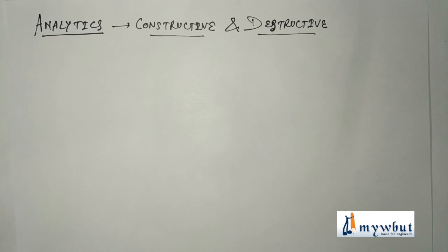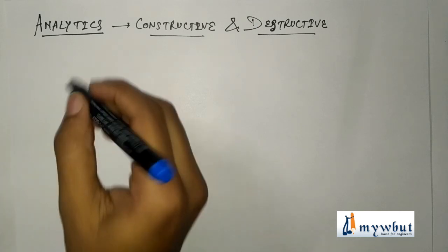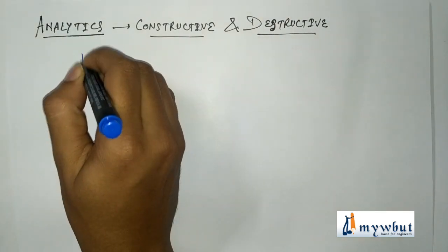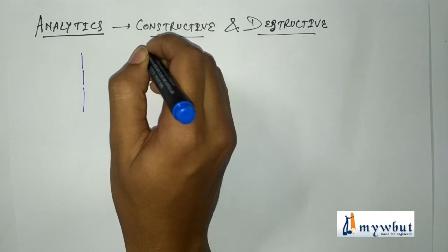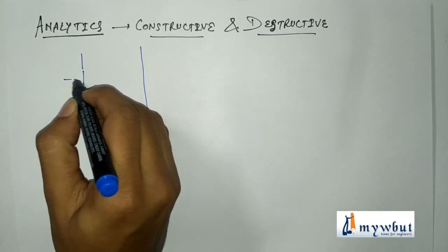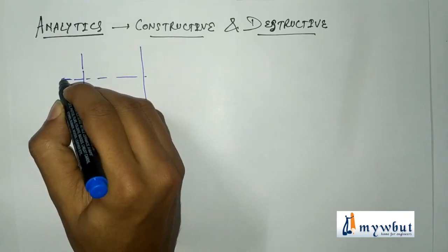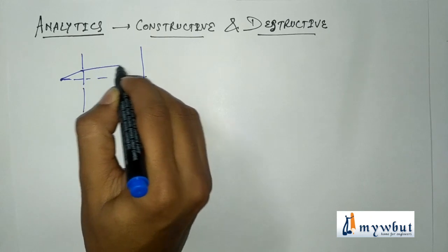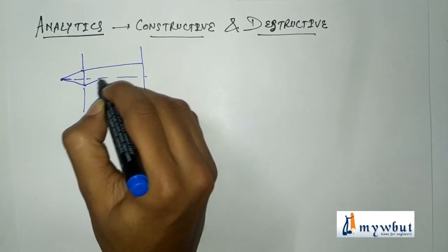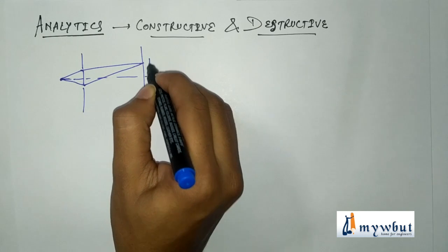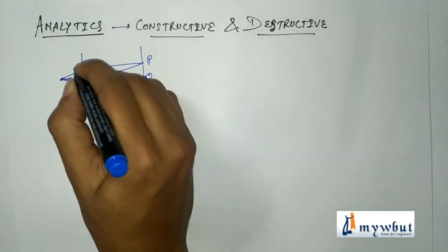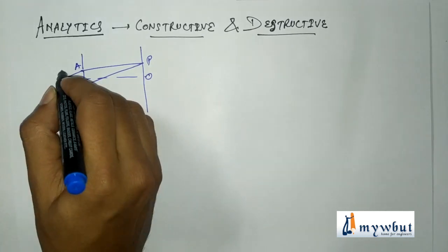Now we'll be doing the analytical treatment — that is, the conditions for constructive and destructive interference. We'll be needing a small schematic diagram. This is the midpoint and this is the main source, from here another source at point B, giving us points P, B, O, A, and S as the main source.